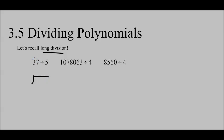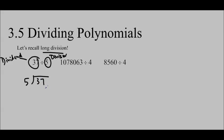So, 37 is the dividend, and 5 is the divisor. You don't really have to know these terms, but it's good to know. The dividend goes on the inside, and the divisor goes on the outside. So we're going to take the 5 and try to put it into 3. We cannot, because 3 is smaller than 5, so now we'll put it into 37.